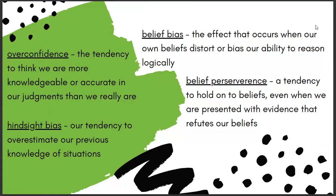Overconfidence is the tendency to think we are more knowledgeable or accurate in our judgments than we are. That can prevent you from looking for more information, asking for help, or getting outside resources. Hindsight bias is our tendency to overestimate our previous knowledge of situations. Even if you're wrong, you think 'yeah, I knew that.' That can often occur with overconfidence — you make a confident decision, find out you're wrong, and say 'oh yeah, totally, I knew that' — that is hindsight bias.